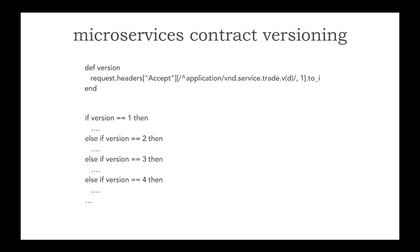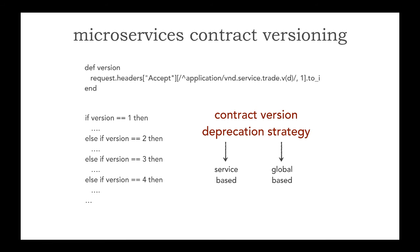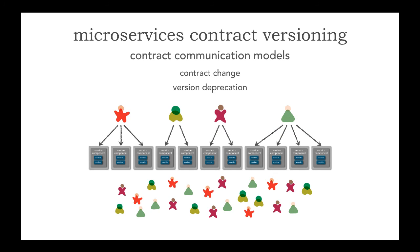Now this may seem like a fairly simple solution, but versioning is really complex. It's not necessarily the technical part — it's about the deprecation strategies of those contract versions. At some point I'm going to have to say I don't support versions 1, 2, or 3 anymore. The first decision I have to make is: is that going to be by service, or is that going to be global across the application? If it's at a service level and I have 200 services, I have 200 versions to maintain — or 200 deprecation strategies. This is where it gets very complex, because there are contract communication models not only to say I changed a contract, but also communicating the fact that I deprecated a version. And this is the difficult aspect of versioning microservices from a contract perspective.